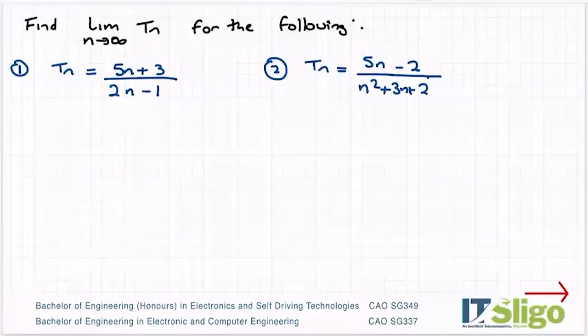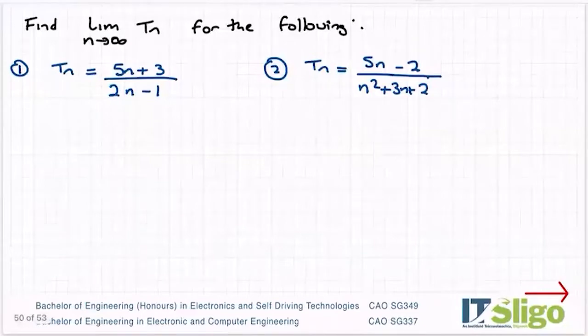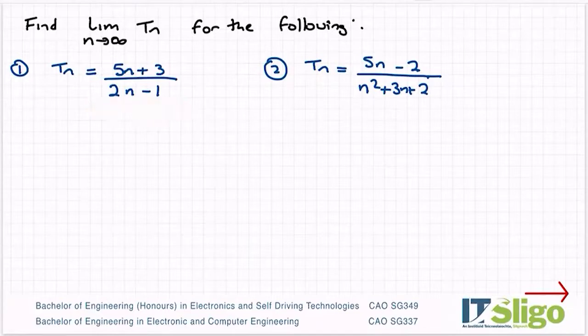Right, let's find some limits of these sequences. So part one, Tn is equal to 5n plus 3 over 2n minus 1. So does the limit exist for this?